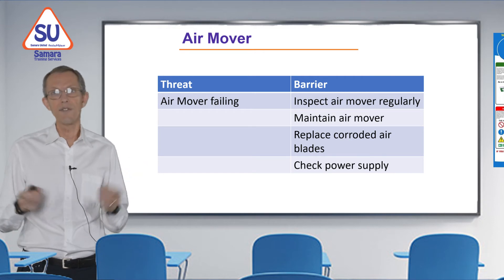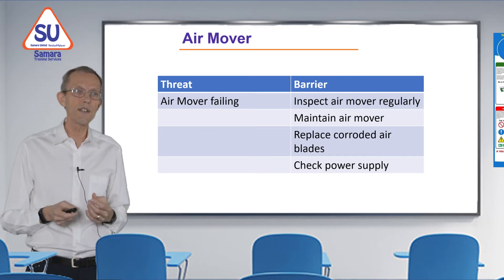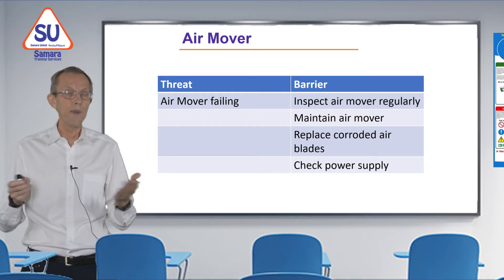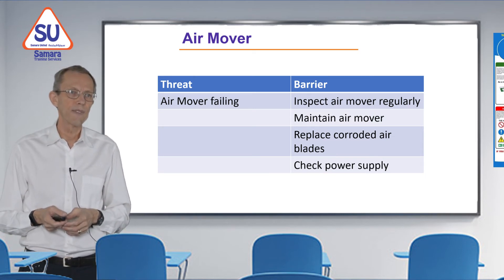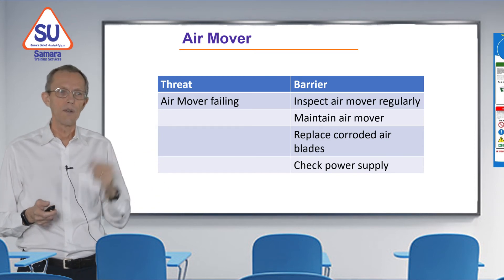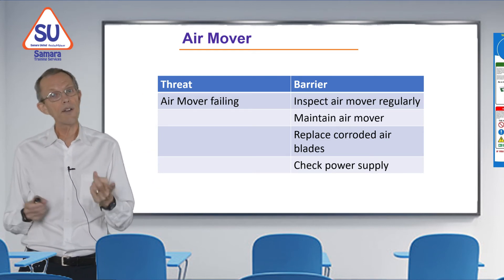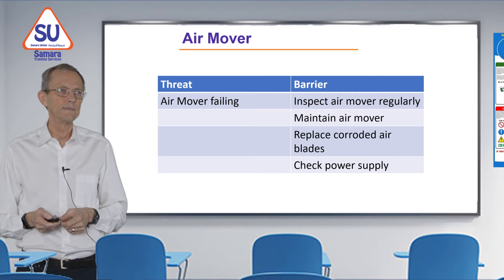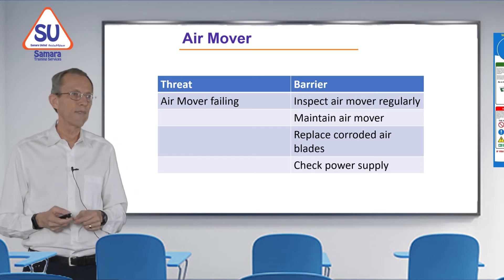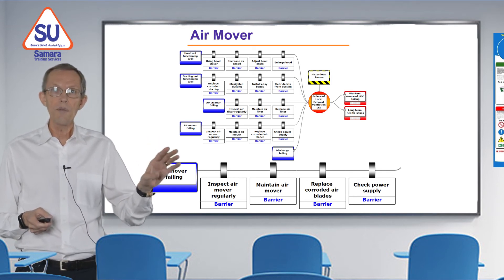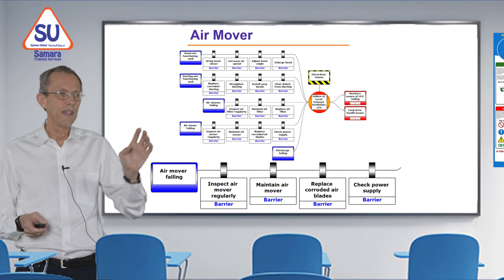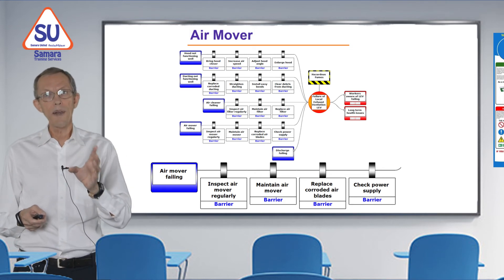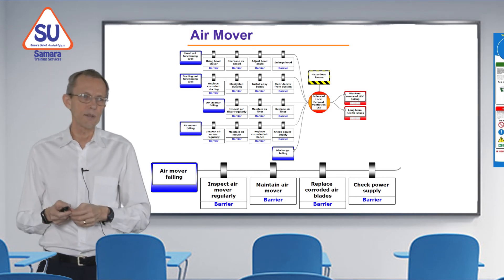The air mover — the fan — is failing. Again, we could inspect it regularly to check it's working as it should. We could maintain it, as all machines benefit from regular maintenance. If the blades are corroded, we could replace them. And we can check the power supply — if power is down, the blades will turn slowly and not work well. On the diagram, the fourth threat line shows: air mover failing, with four barriers — inspect the fan, maintain it, replace corroded blades, and check the power supply.